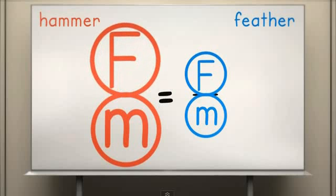So we know from Newton's second law that the hammer and the feather fall at the same speed, because even though the hammer is pulled with more force, it also has a greater mass. So in the end, the ratio of force to mass is the same for the two objects. This is why they fall at the same rate.